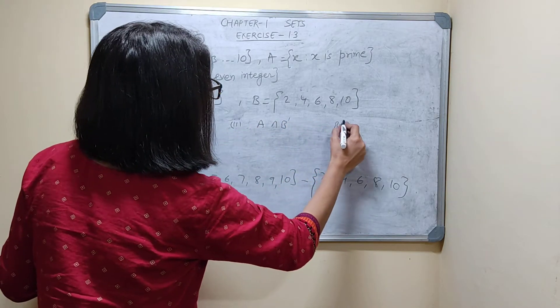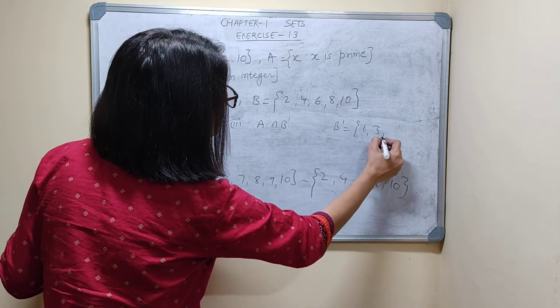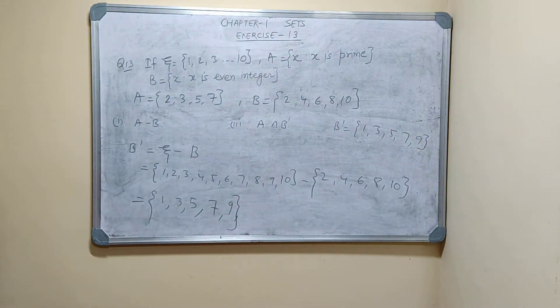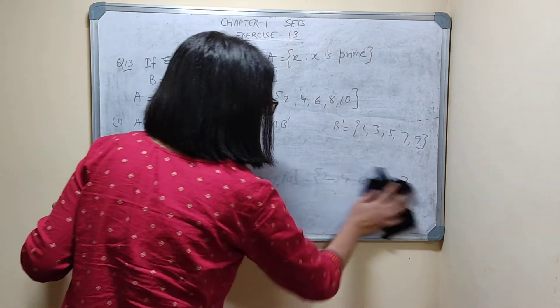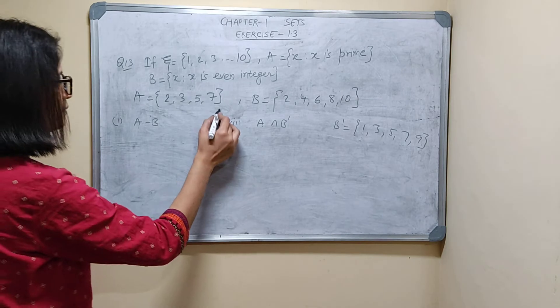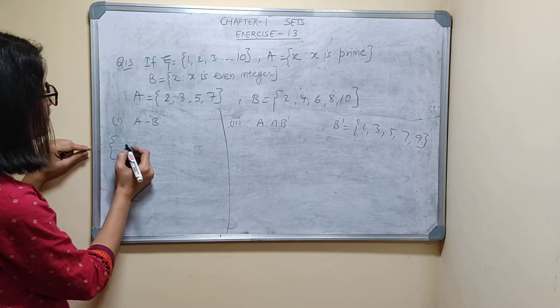So B dash will be what? 1, 3, 5, 7, 9. Now you have to find A minus B. First A minus B, what will be A minus B?